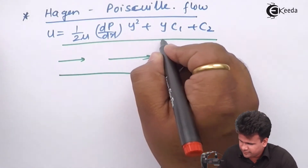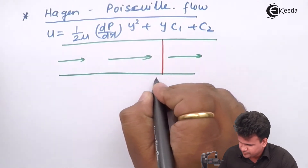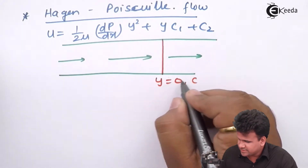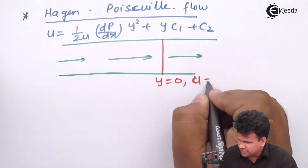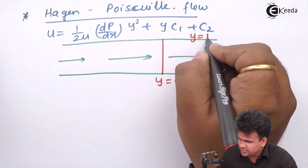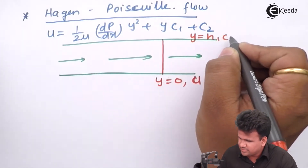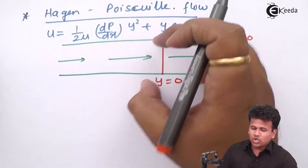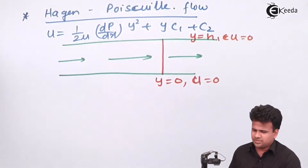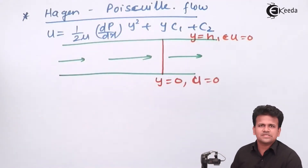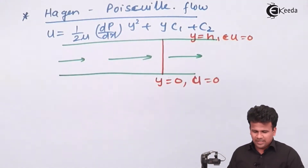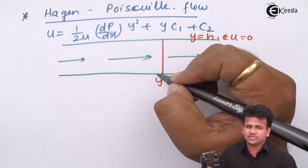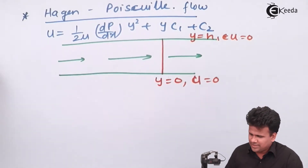The boundary conditions are: at y equal to 0, u is equal to 0; and at y equal to h, u is also equal to 0. That means the fluid velocity at the top surface and the bottom surface is 0. Applying these boundary conditions in this equation, we have to solve and find out how the velocity will change.